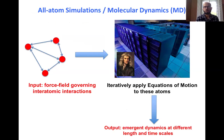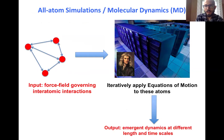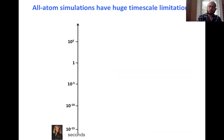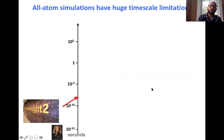Molecular dynamics simulations are essentially as simple as solving Newton's laws of motion. You take as input a force field or potential that governs interactions between atoms, and then you evolve Newton's law of motion as a function of time. We have to do this on a supercomputer because there are so many atoms. Once you keep doing it again and again you can get emergent dynamics at different length and time scales, from femtoseconds all the way up to longer scales. On supercomputers such as Deepthought at the University of Maryland, you can get up to a microsecond if you run for a couple of weeks.